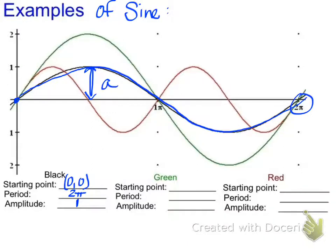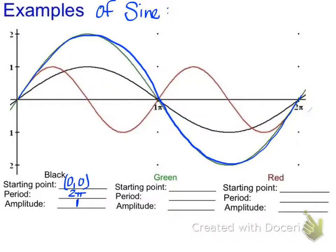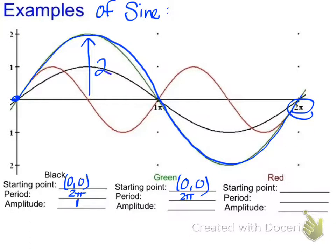Now the green curve. Tracing one period, the starting value is also (0, 0), and the period is also 2π, going from 0 to 2π — same as the black line so far. The difference is the amplitude: the green curve goes up 2 and down 2 from the center line, so the amplitude is 2.